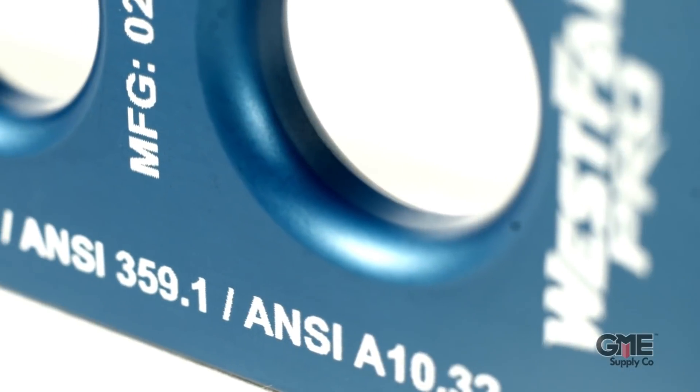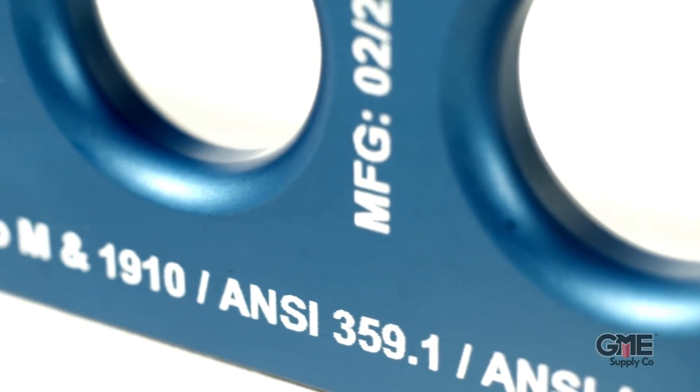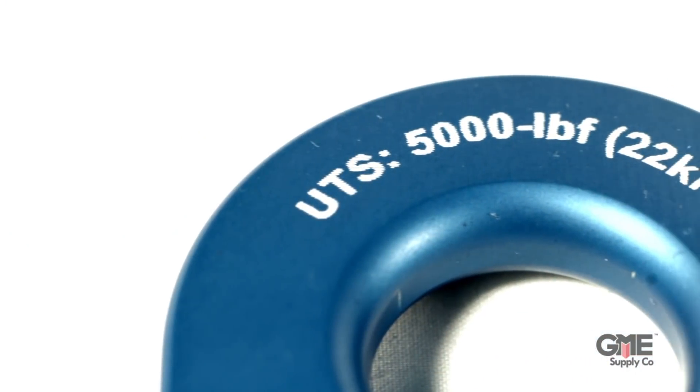According to ANSI Z359.1 a load-bearing rope must maintain a minimum breaking strength of 5,000 pounds. Typical climbing knots can reduce the strength of a lifeline by as much as 50%, in some cases dropping that MBS far below 5,000 pounds.